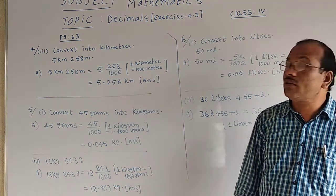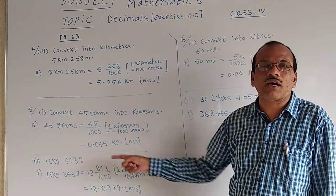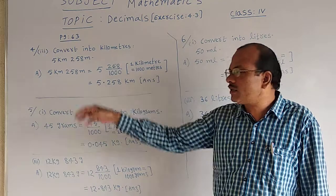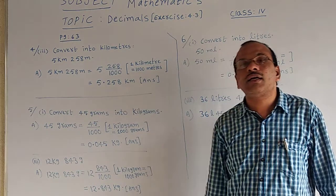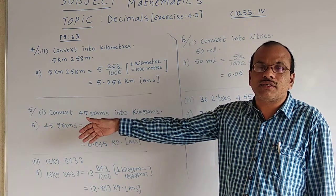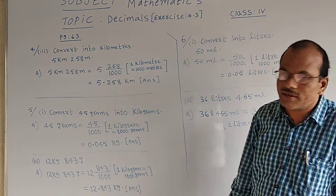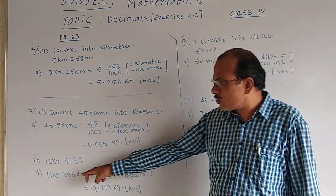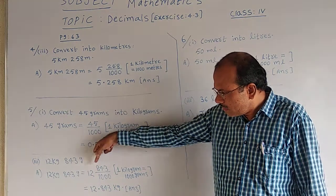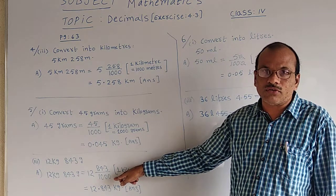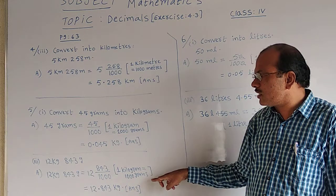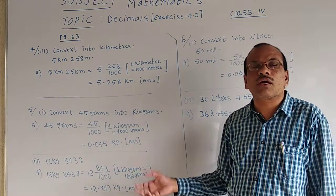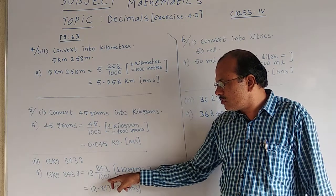That is equal to the given question: 45 grams — we should convert into kilograms. Now see the third part of question 5: 12 kg 843 grams. The 12 kg is already in kilograms, so it need not change. But 843 is in grams — that we have to convert into kilograms. So I have written the question as 12 as it is, then 843 divided by 1,000, because 1 kg is equal to 1,000 grams.